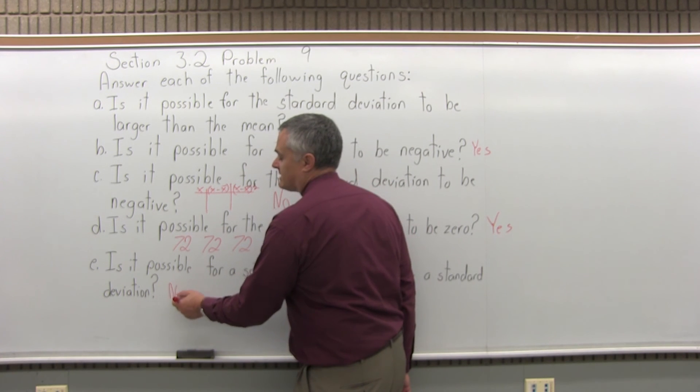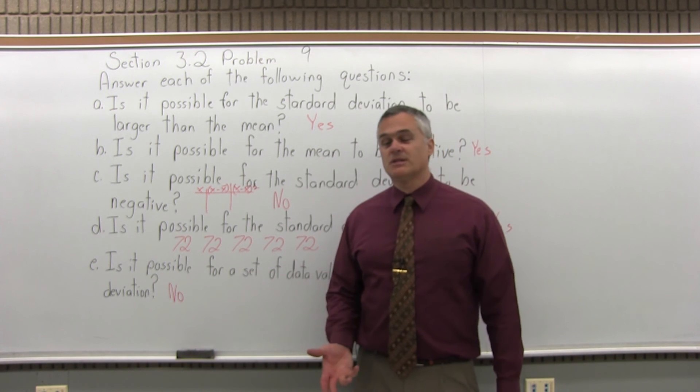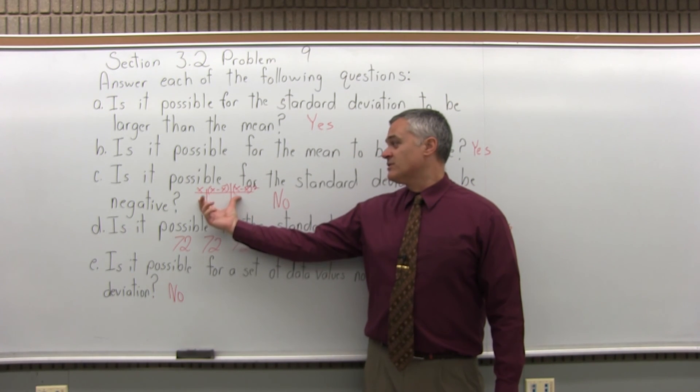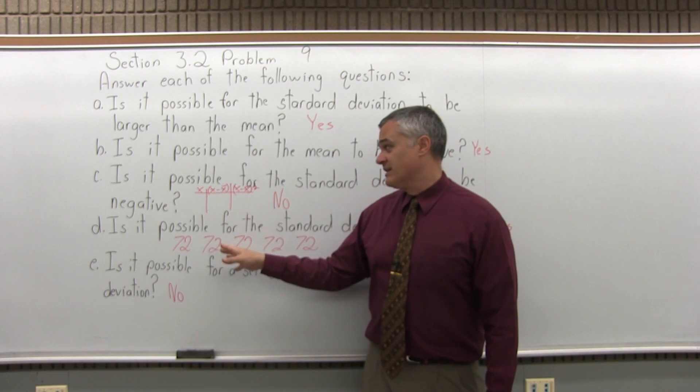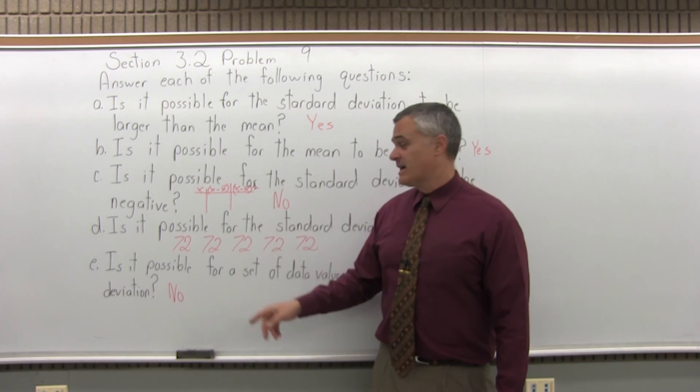There must be a standard deviation for any set of data values. Again, if you go back to how the standard deviation is found, it comes from the square root of the variance. And the variance you find by filling out this chart with the three columns, you're always going to have a mean for any set of data values. And once you have a mean, you can always fill out the rest of it and do all the steps.